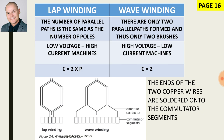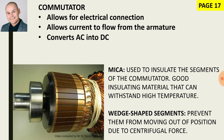The ends of the windings are soldered onto the commutator segments. The main function of the commutator is to allow for electrical connection and allows current to flow from the armature. It also converts AC into DC. The commutator is divided up into many segments made of copper, and each segment is insulated by a material called mica. Mica is a good insulating material and can withstand high temperature.